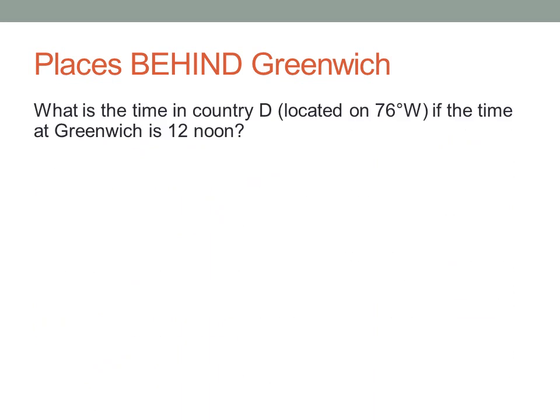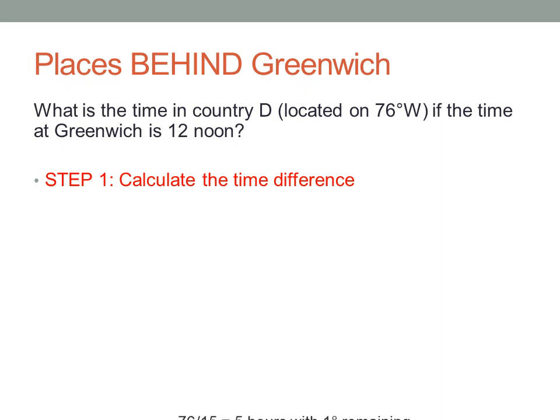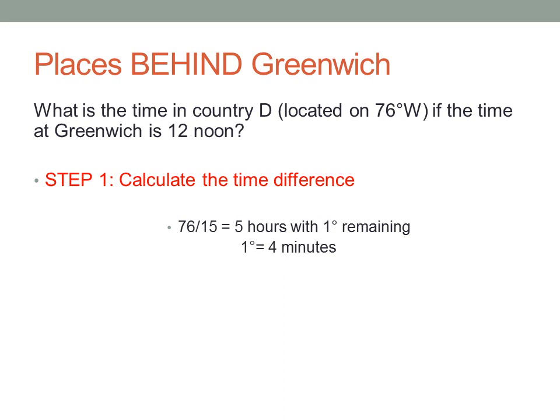Our second worked example states: what is the time in country D, located on 76 degrees west, if the time at Greenwich is 12 noon? Step 1, we're going to calculate the time difference. We will divide 76 by 15, which will give us 5 hours with 1 degree remaining. As already established, 1 degree equals 4 minutes. Therefore, the time difference is 5 hours and 4 minutes.